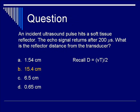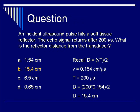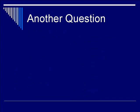Using the equation D equals VT over 2, where V is 0.154 centimeters per microsecond and T is 200 microseconds, plugging these numbers in: D equals 200 times 0.154 divided by 2, and you arrive at a distance of 15.4 centimeters.